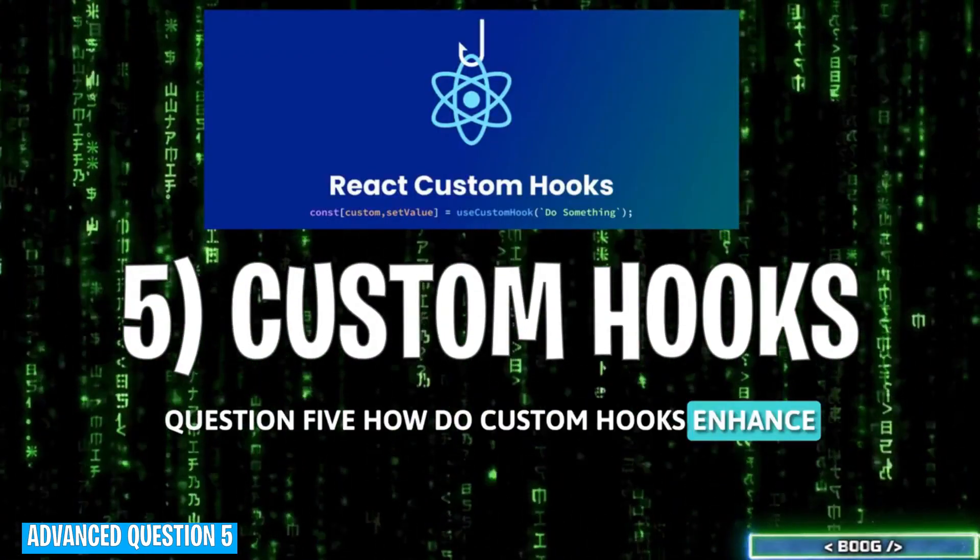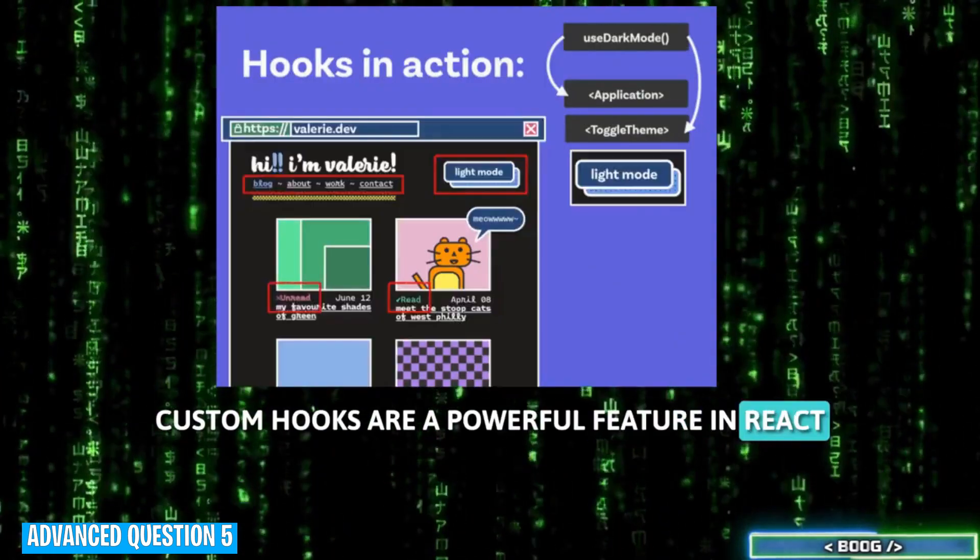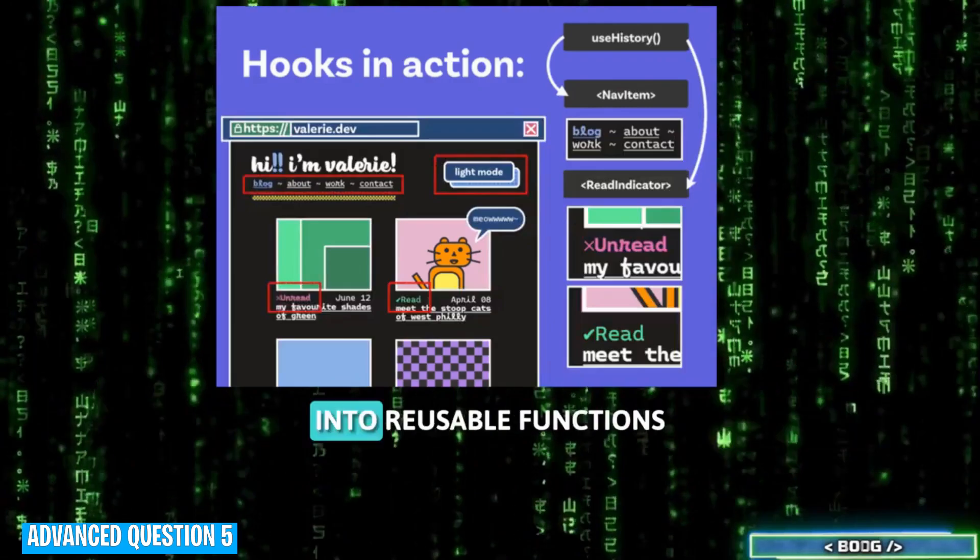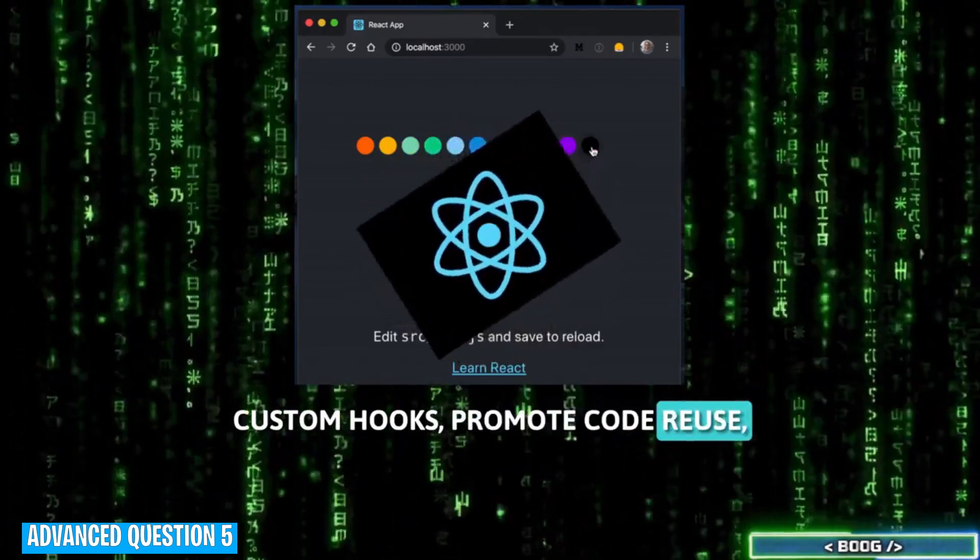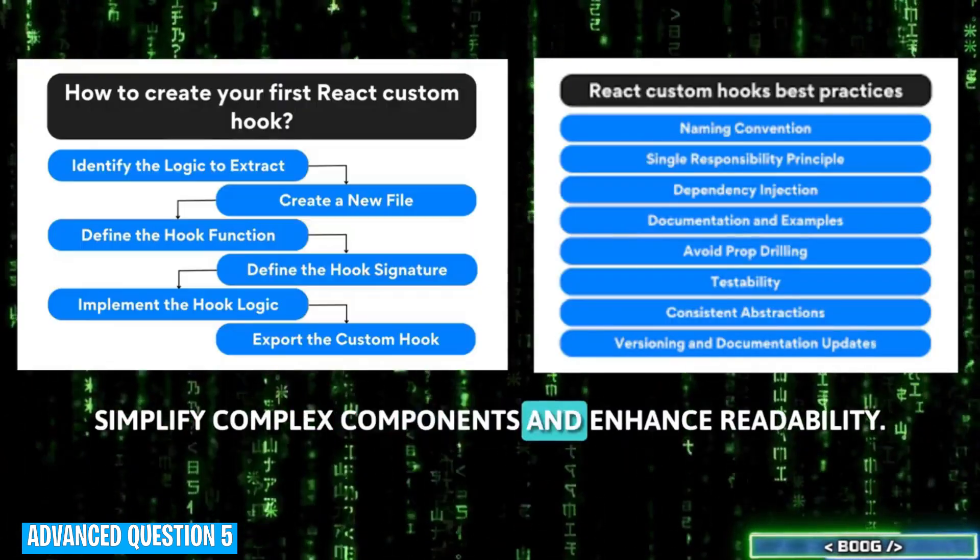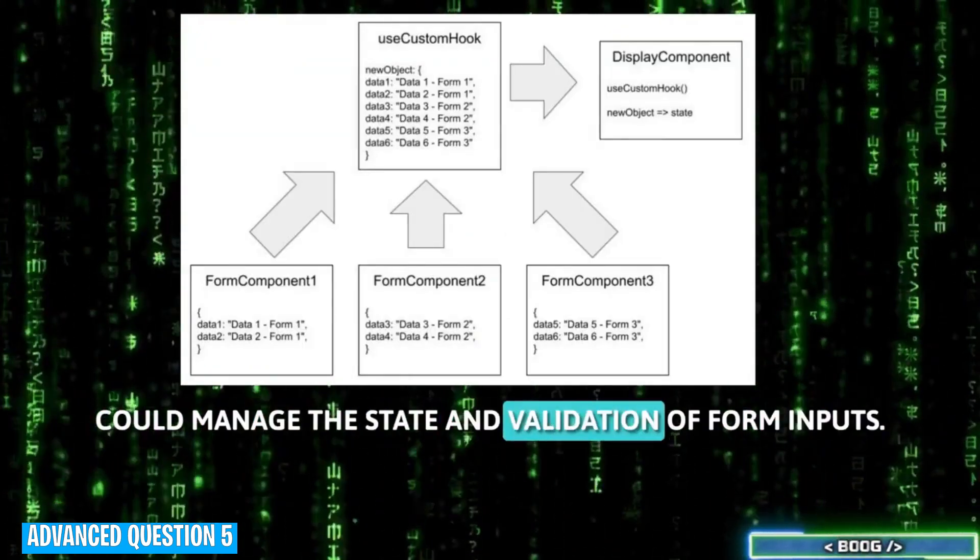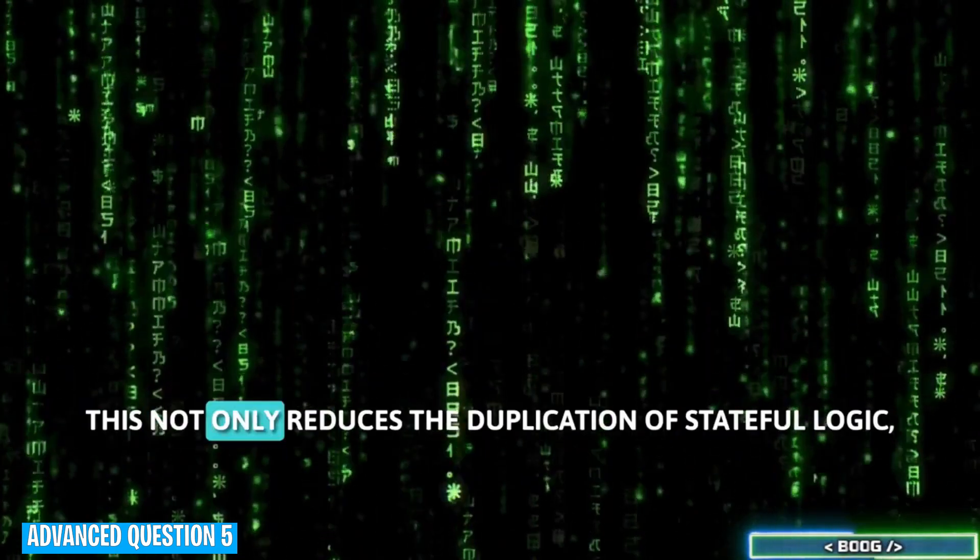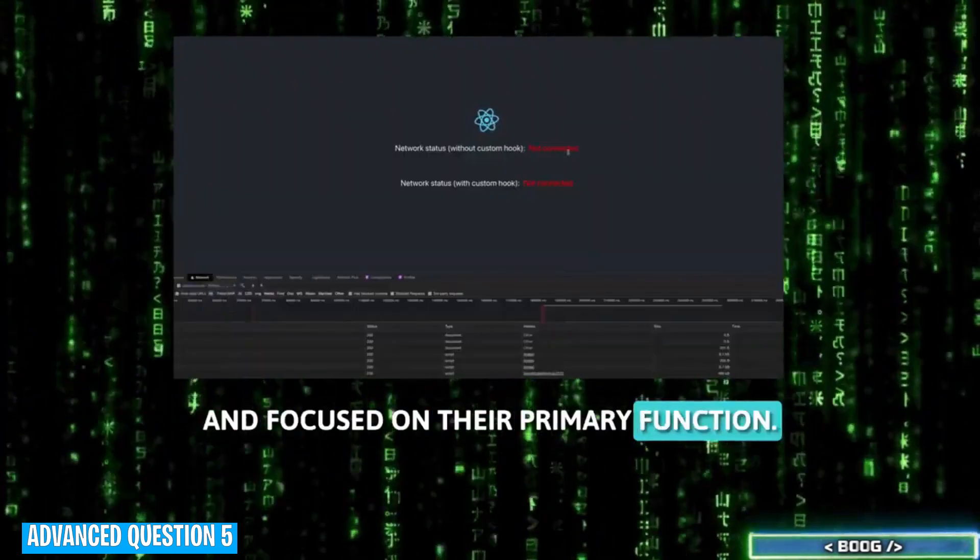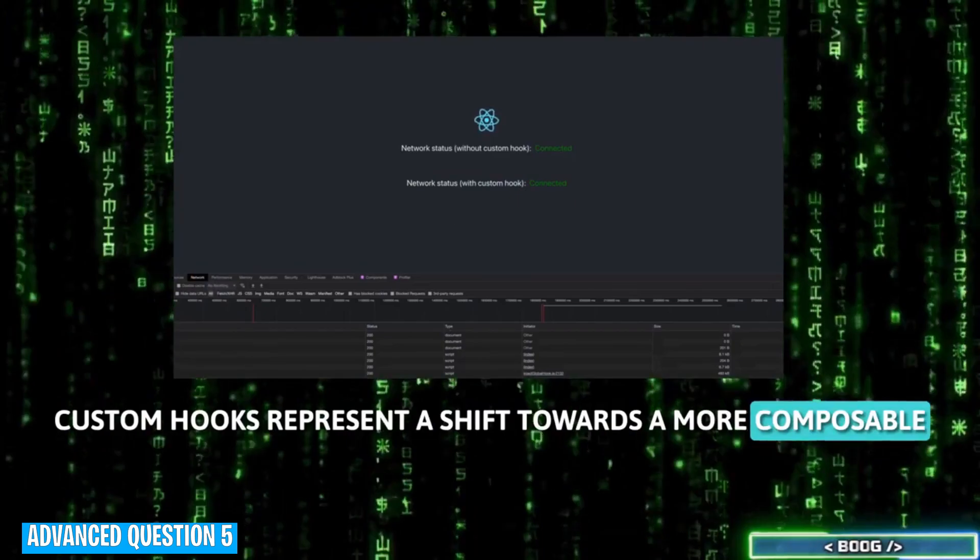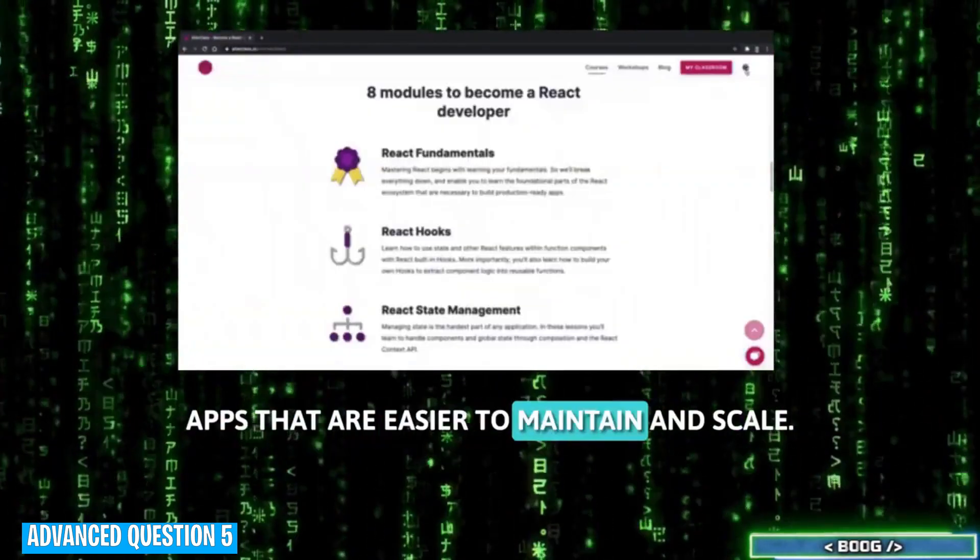Question 5. How do custom hooks enhance the functionality of React apps and can you provide an example? Custom hooks are a powerful feature in React that allows developers to extract component logic into reusable functions. By encapsulating and sharing logic across components, custom hooks promote code reuse, simplify complex components, and enhance readability. For example, a custom hook called UseFormInput could manage the state and validation of form inputs. This not only reduces the duplication of stateful logic, but also makes components cleaner and focused on their primary function. Custom hooks represent a shift towards a more composable and functional approach in React development, enabling developers to build apps that are easier to maintain and scale.